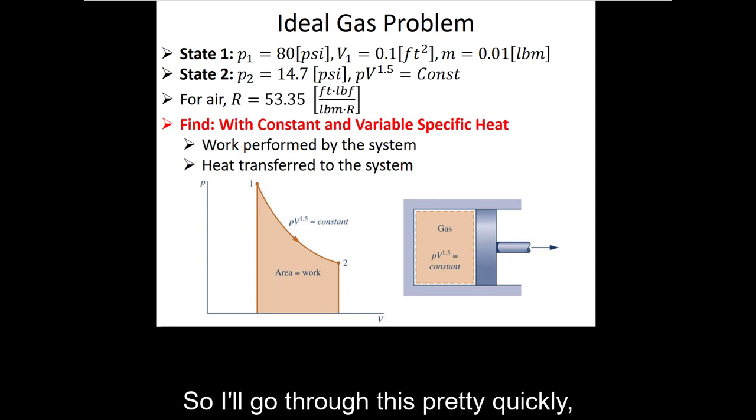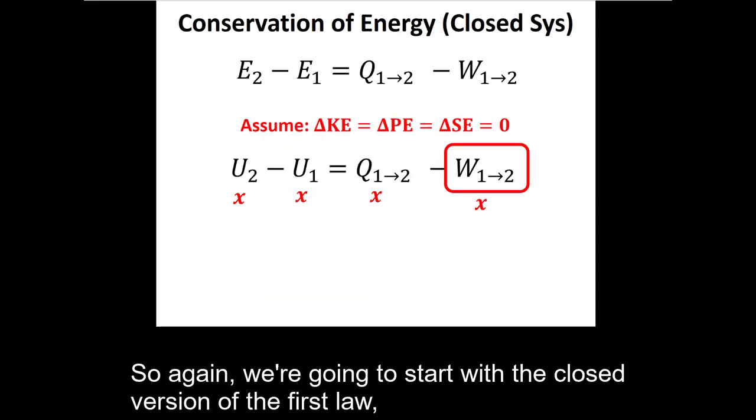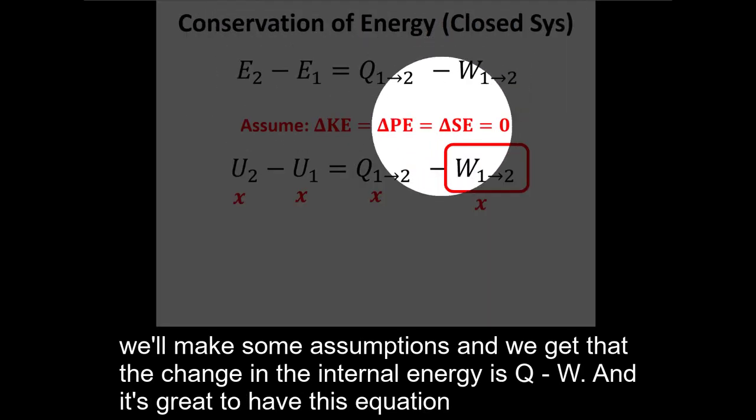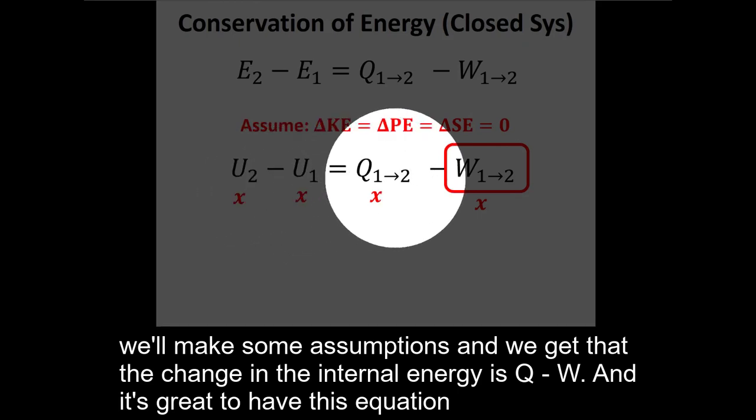I'll go through this pretty quickly, both from constant specific heat and variable specific heat perspectives. So again, we're going to start with the closed version of the first law. We'll make some assumptions and we get that the change in internal energy is equal to Q minus W.